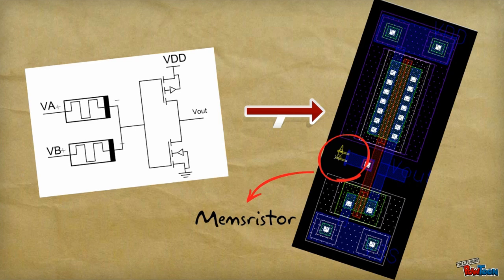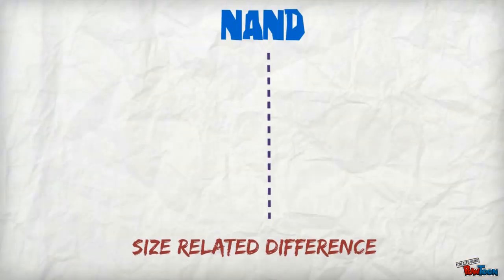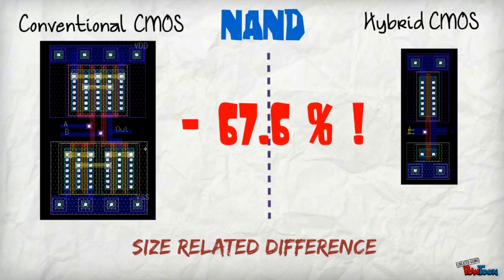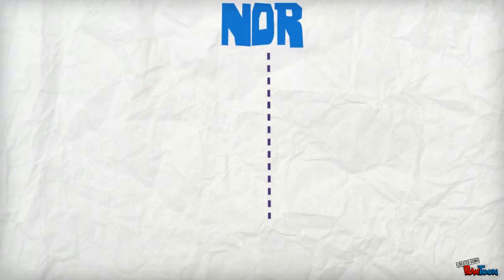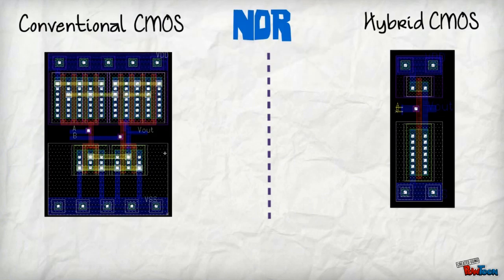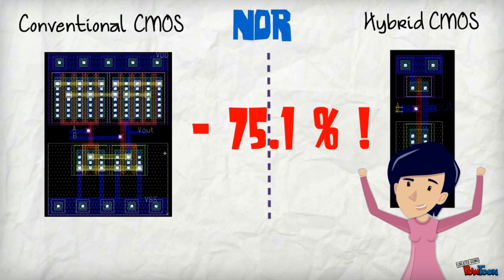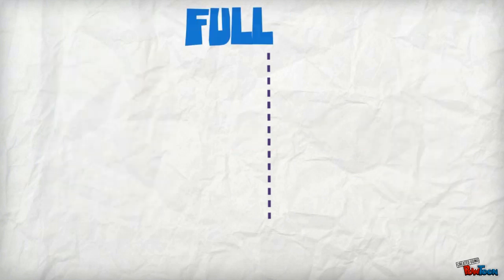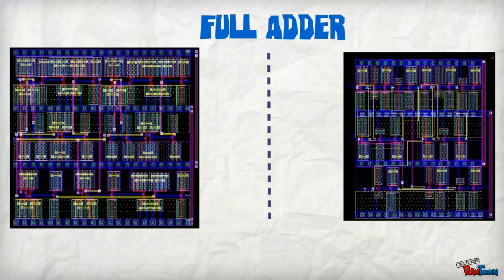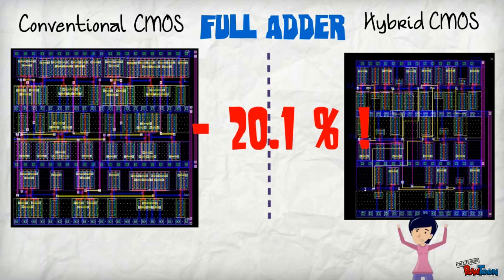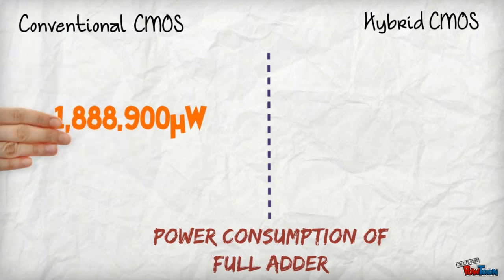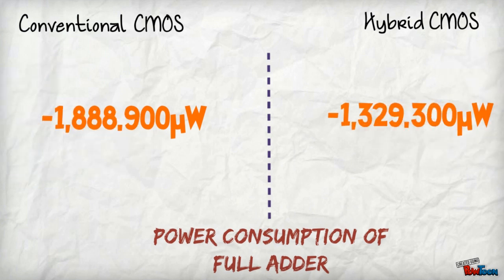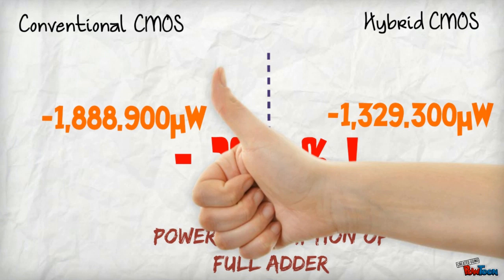Comparing the size at nanoscale between conventional CMOS and hybrid CMOS, the hybrid CMOS results in a 67.6% area decrement. At the nanoscale level, the decrement turned out to be 75.1%. When both gates are implemented in a full Adder, the total is a 20.1% decrement in favor of hybrid CMOS. In the case of power consumption, using simulation results, it turned out to be 29.6% less.